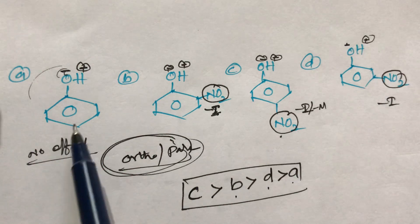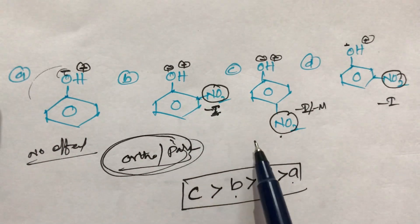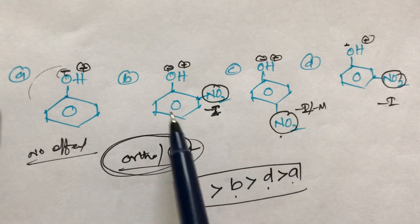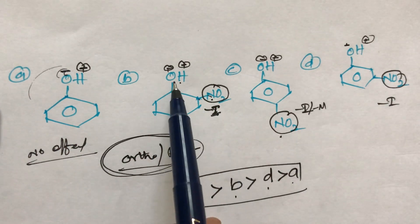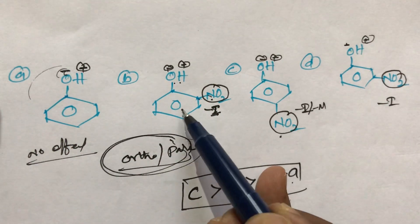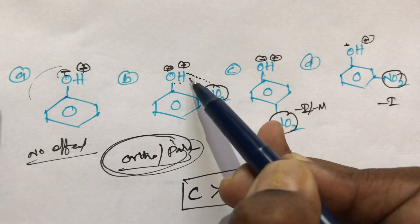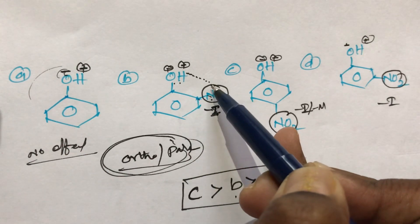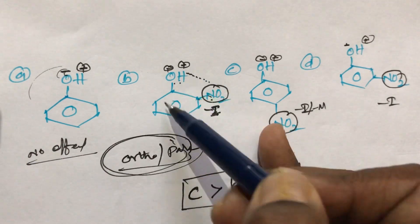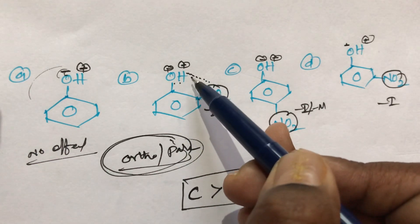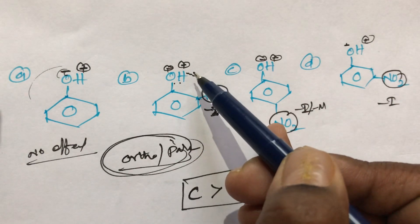Compound a is the least acidic due to the absence of any -I effect. Now, what is the reason that compound c is more acidic than compound b? Both have the NO₂ group nearby the OH group. But in compound b (ortho-nitrophenol), there is an intramolecular hydrogen bond present between the hydrogen of the OH group and the oxygen of the NO₂ group.